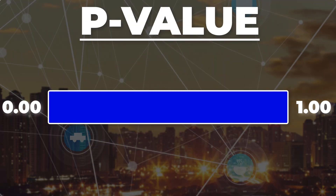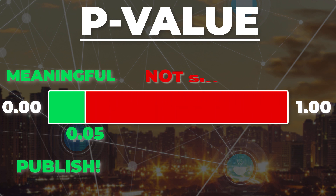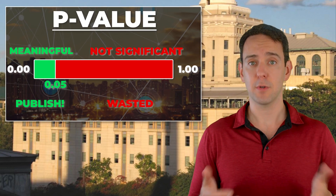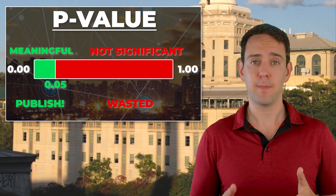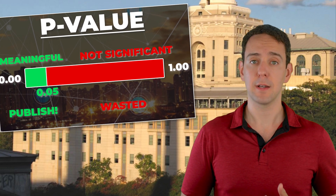But in a few seconds: researchers are motivated to get what's called a p-value to be below a threshold of 0.05. If they do that, their findings are considered meaningful and they can typically publish their results. If they don't, all their work is largely wasted. And to get those p-values below 0.05, there are some very dubious and unethical approaches they can take.